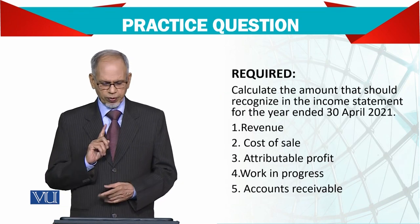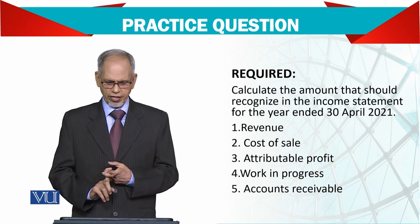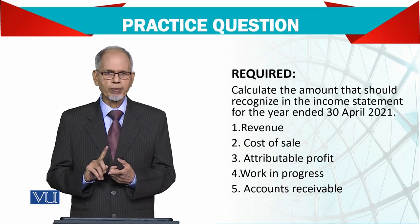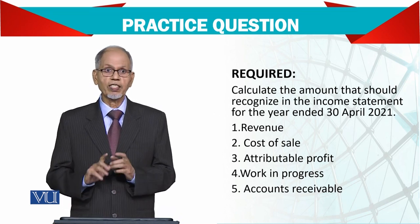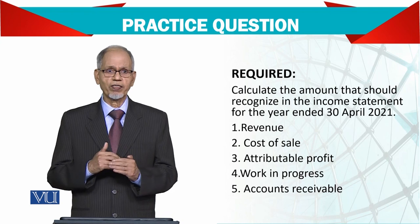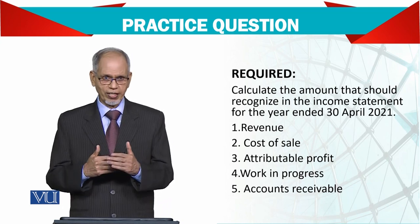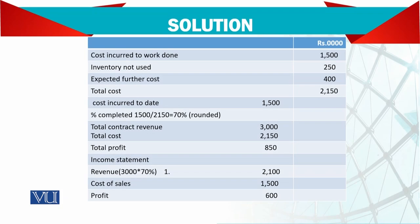The requirements are: number one, the revenue to be recorded; cost of sales to be recorded; attributable profit; and work in progress, because the contract is not yet complete. Also, the account receivable. The cost incurred for work done is 1.5 million, inventory cost is 250,000, and expected future cost is 400,000, so total cost of this contract is 2.15 million.